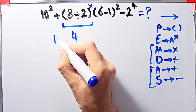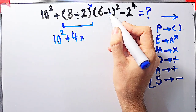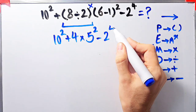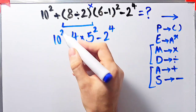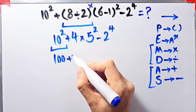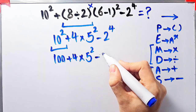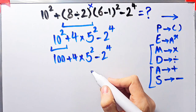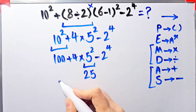Now we have: 10 to the power of 2, plus 4, times open parenthesis 6 minus 1 closed parenthesis which equals 5, then to the power of 2, minus 2 to the power of 4. Now we have exponent, addition, multiplication, and subtraction. First we simplify the exponent: 10 to the power of 2 equals 100. We now have 100 plus 4, then times 5 to the power of 2, minus 2 to the power of 4. Next we simplify the exponent: 5 to the power of 2 equals 25.